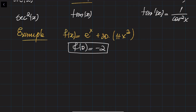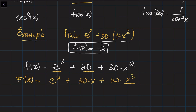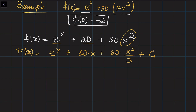First, expand the function: it becomes e to the x plus 20 plus 20 times x squared. Now take the antiderivative of each term separately. The antiderivative of e to the x is e to the x; the antiderivative of 20 is 20x; and the antiderivative of 20x squared is 20 times x cubed divided by 3. We must not forget to add the constant C at the end.